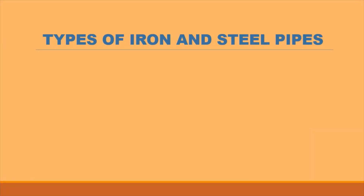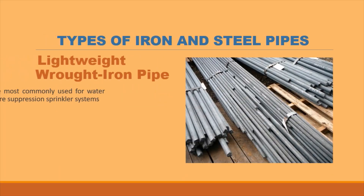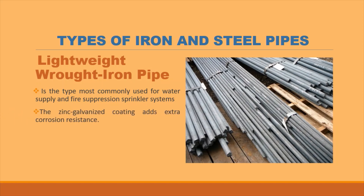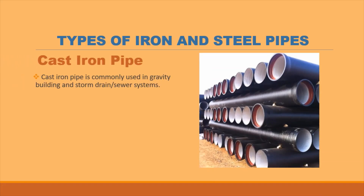There are three types of iron and steel pipe. Galvanized steel pipe is covered with a protective coating of zinc that greatly reduces its tendency to corrode, extending its life expectancy. It is moderately corrosion-resistant and suitable for mildly acid water. Lightweight wrought iron pipe is most commonly used for water supply and fire suppression sprinkler systems; the zinc galvanized coating adds extra corrosion resistance. Cast iron pipe is commonly used in gravity building and storm drain sewer systems, and is limited to gravity pressure systems.